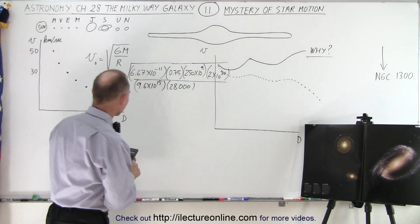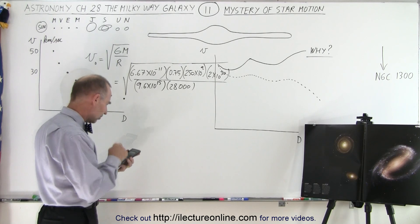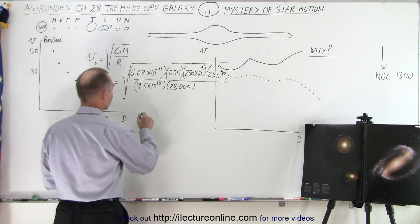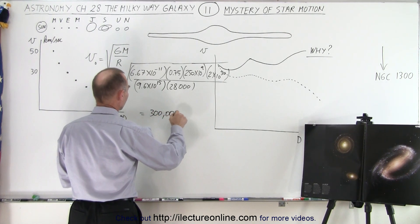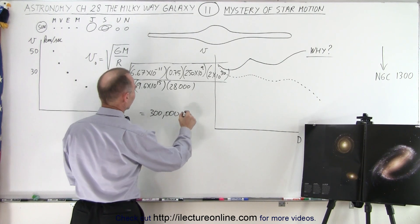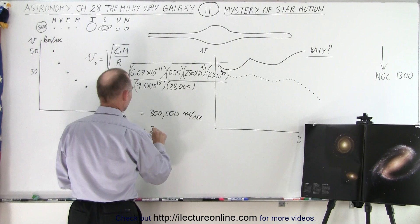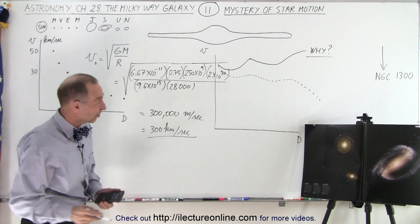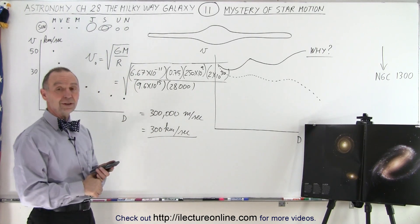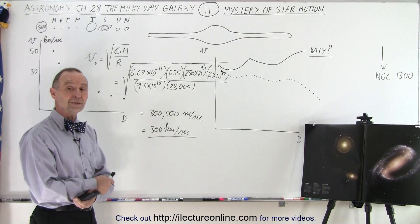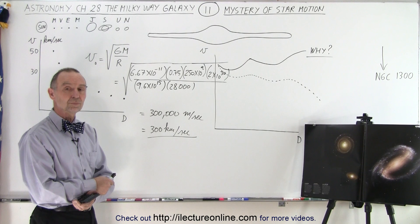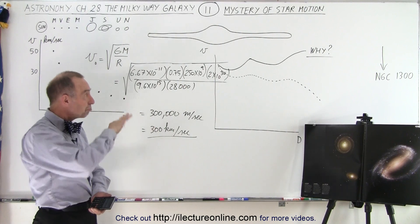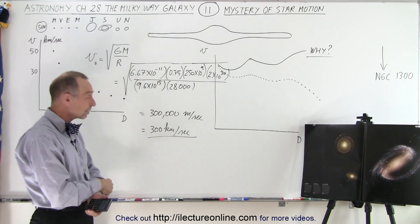All right, let's see what we come up with. 6.67... and the sun should be moving at about 300,000 meters per second. That's about 300 kilometers per second. So based upon some rough calculations on the fly, the sun should be moving about 300 kilometers per second around the galaxy. That would be based upon what we see, more or less, plus or minus a little bit - about 300 kilometers per second.